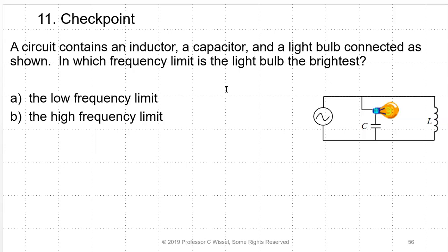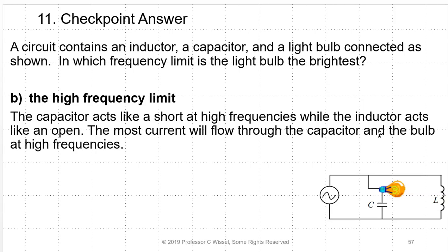Interesting circuit concept: a light bulb and capacitor in series, with an inductor in parallel with that branch. At high frequency, the capacitor acts like a short circuit while the inductor acts like an open circuit, so most current flows through the capacitor-bulb branch and the bulb lights up. At low frequency, the opposite occurs. So the bulb is brightest at the high-frequency limit — this makes a cheap and dirty frequency detector.